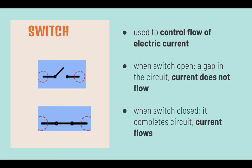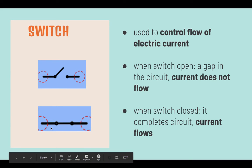Next, a switch has to also be connected in a circuit diagram, as it is used to control the flow of electric current. When the switch is open, as shown in this picture, there will be a gap in the circuit and current does not flow through. When the switch is closed, it completes the circuit and current will flow through.